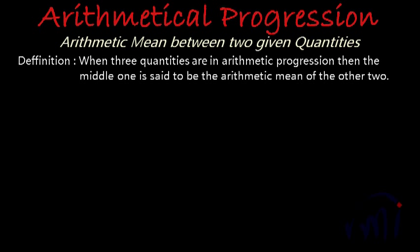Hi, so in this video we are going to learn about arithmetic means. So first let's read the definition. Definition says, when three quantities are in arithmetic progression, then the middle one is said to be the arithmetic mean of other two.